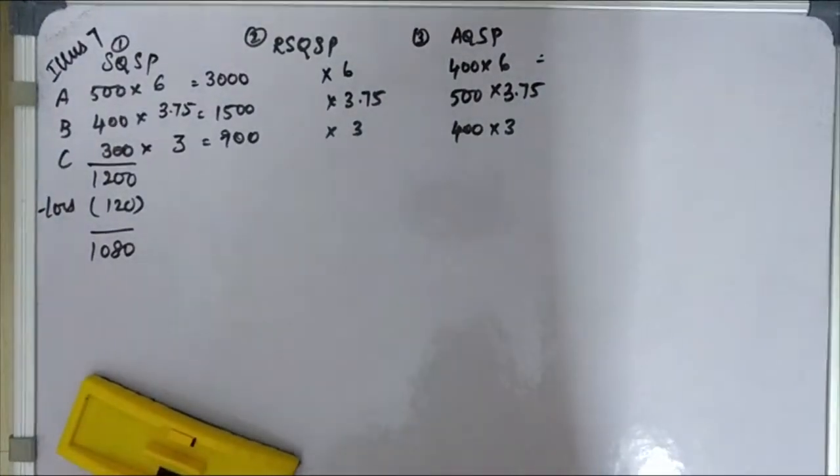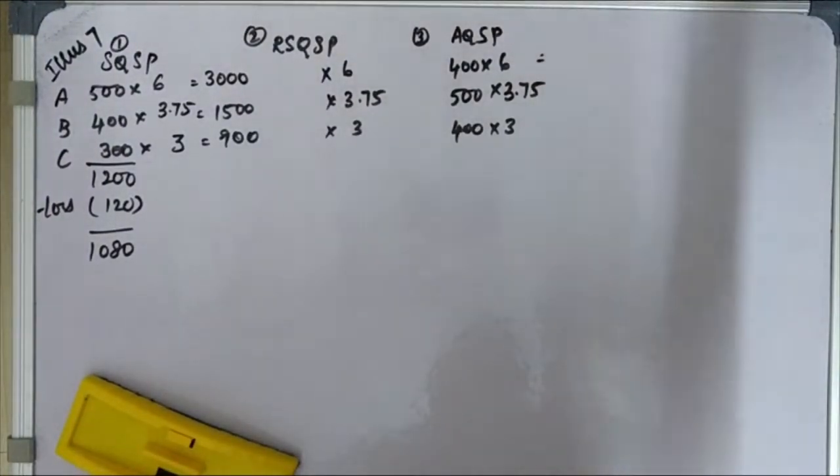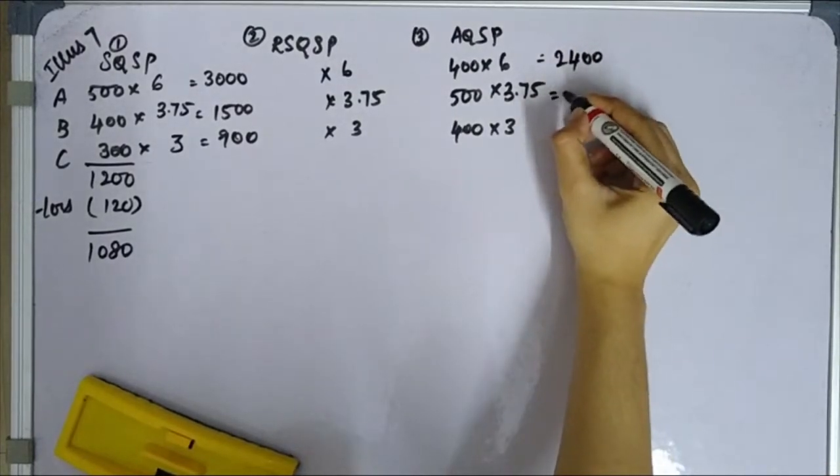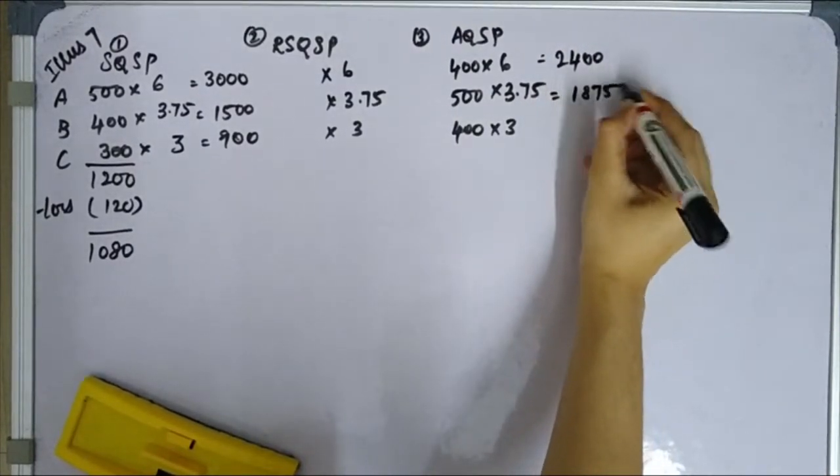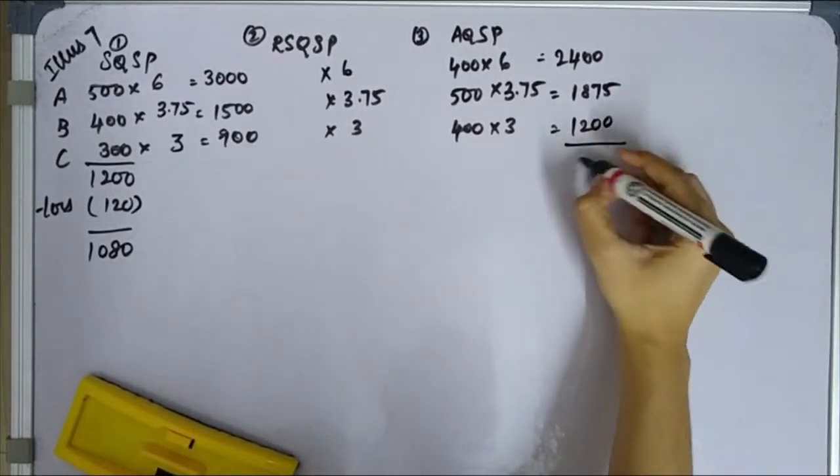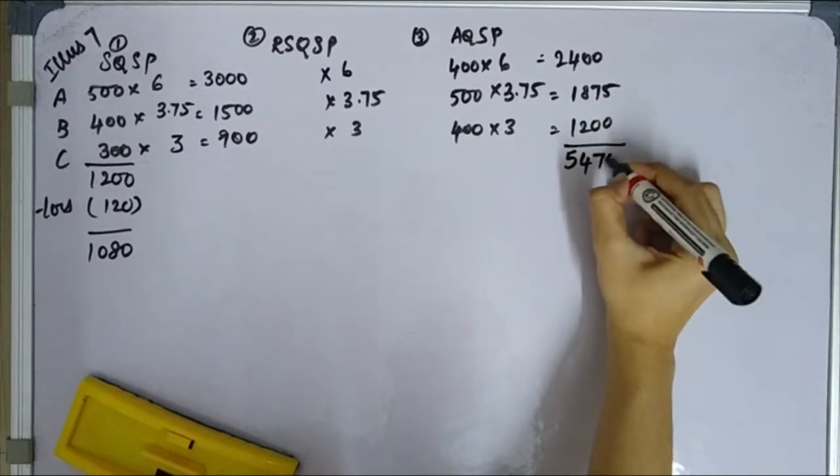When I multiply, I get 2,400, and for this one is 1,875, and for this one is 1,200. Overall summation 5,475.